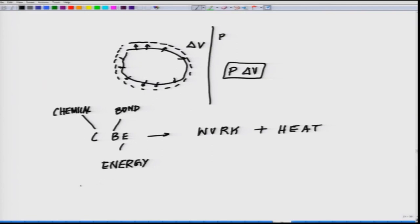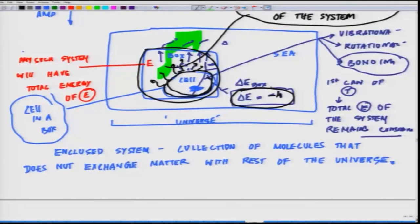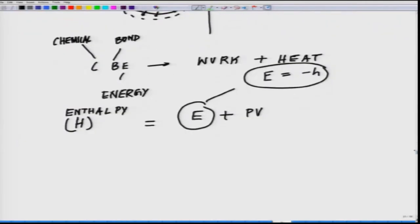Enthalpy H — if you remember from the last class — enthalpy H is equal to E plus PV. And delta E equals minus H, which is the heat that is lost. So delta E equals minus H; that term comes from here, meaning delta H represents the heat transfer.